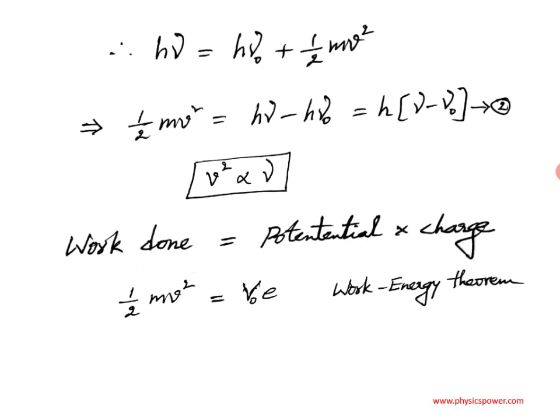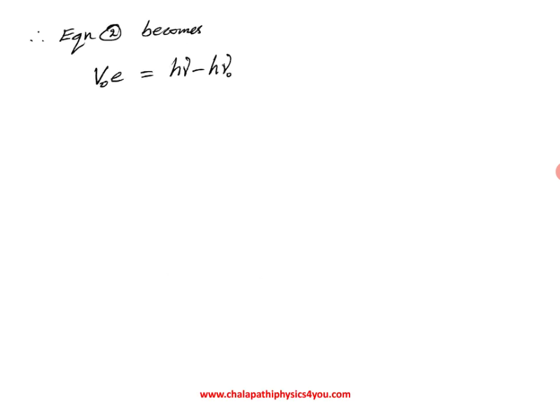Substituting V₀e in place of ½mv² in equation 2, the equation becomes: V₀e = hμ − hμ₀. Rearranging, the stopping potential equals (h/e)μ − (h/e)μ₀.